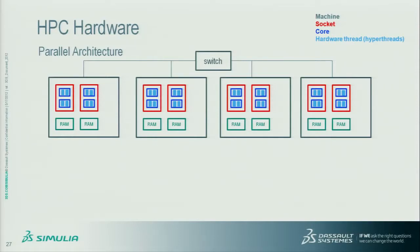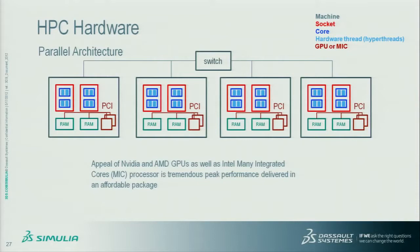One other thing worth noting is hardware threading, or hyper-threads — within a core you can have multiple streams of execution running at a time. In the x86 world this is not a particularly successful technology; we'll tell you to turn it off. But it's quite relevant in the GPU realm, so I wanted to set that stage. The new addition here is the offering of GPUs from Nvidia and AMD — you can have one to several GPUs in a server, connected to x86 memory through a PCI bus.